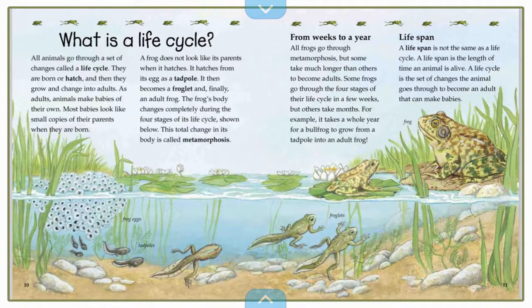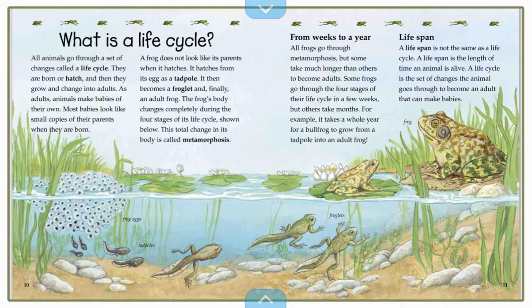All animals go through a set of changes called a life cycle. They are born, or hatch, and then they grow and change into adults. As adults, animals make babies of their own. Most babies look like small copies of their parents when they are born. A frog does not look like its parents when it hatches. It hatches from its egg as a tadpole, then becomes a froglet, and finally an adult frog. The frog's body changes completely during the four stages of its life cycle.